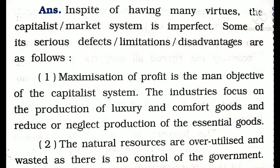Number one: maximization of profit is the main objective of the capitalist system. The industries focus on the production of luxury and comfort goods, and reduce or neglect the production of essential goods. In the market system, industrialists focus only on getting more and more profit.